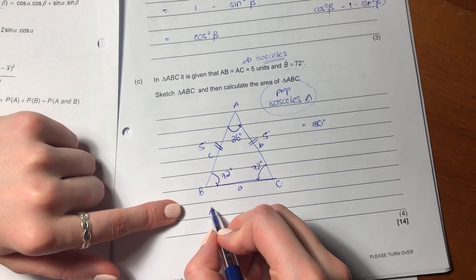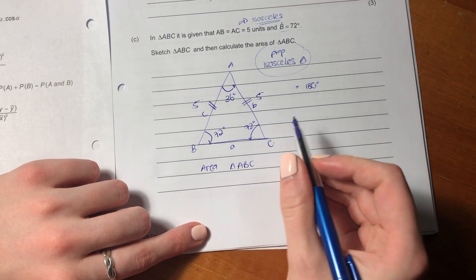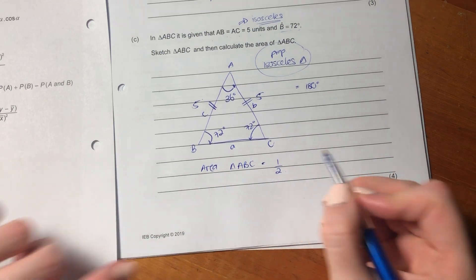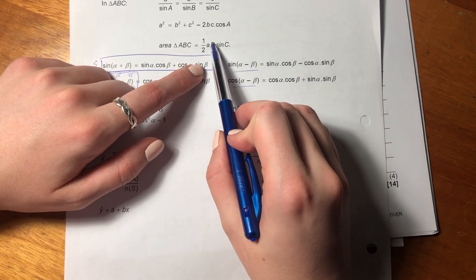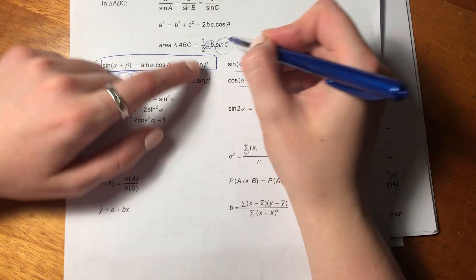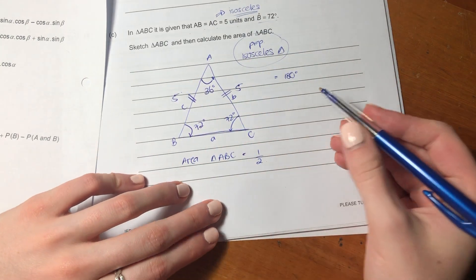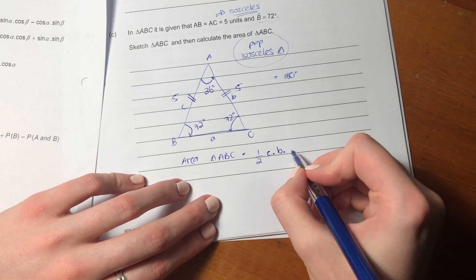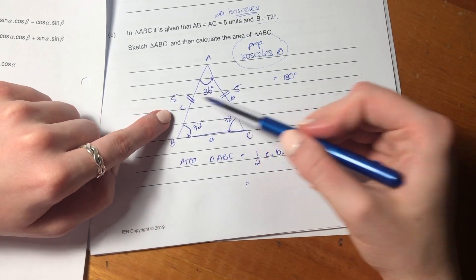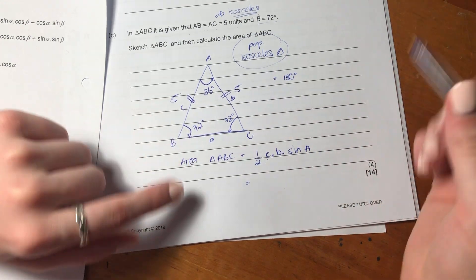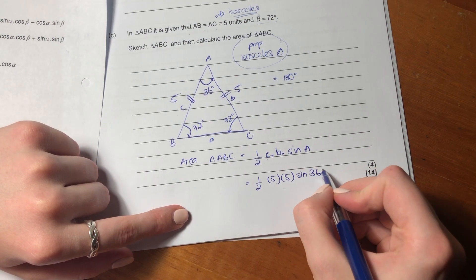So we can say the area of the triangle ABC can equal also, so sometimes people get confused because they're like it has to be AB and then sine C. But effectively what it has to be is the two sides that you have and the angle that is actually in between them. So in this case we're going to say it's actually side C times side B times sine A. So remember that, remember that relationship. It's the two sides that you have and the angle in between them. So it's half, five times five, sine 36.